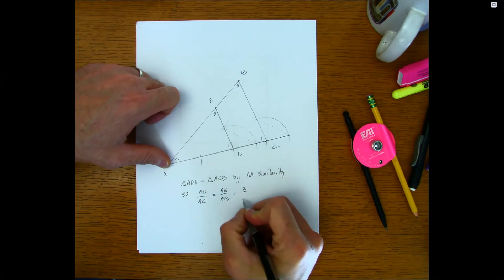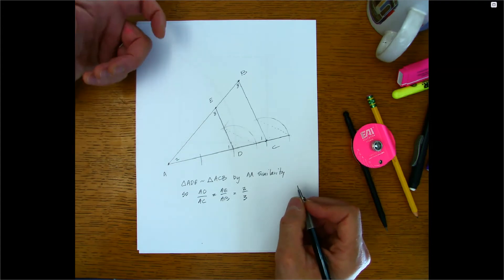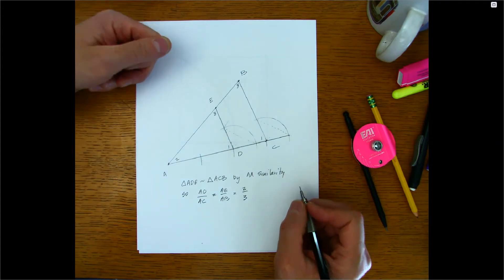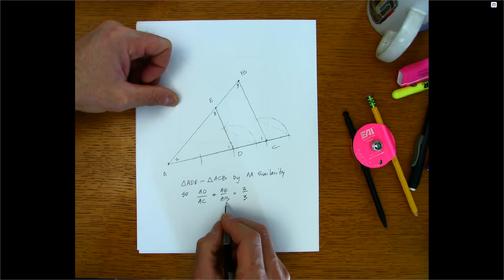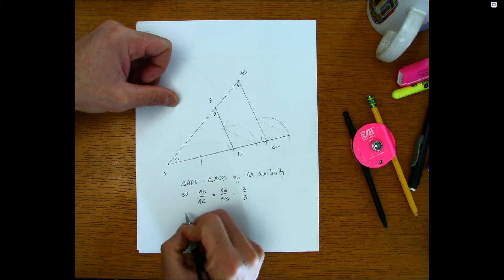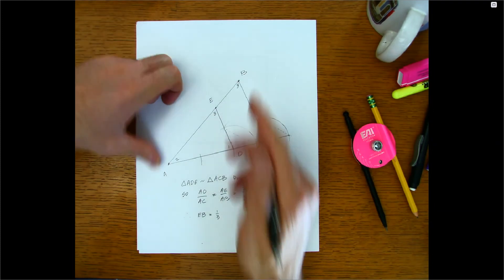So I guess we can take this out of the right-hand equality here and just say that AE is to AB as 2 is to 3. So I guess, therefore, we can conclude that EB is going to be equal to 1 third of the distance of AB.